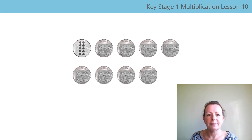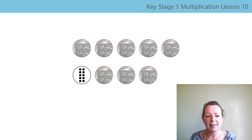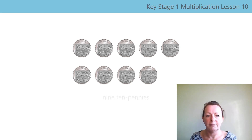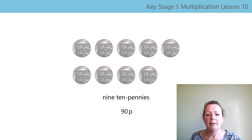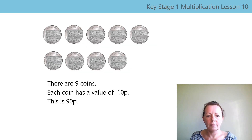Let's count: one tenpenny, two tenpennies, three tenpennies, four tenpennies, five tenpennies, six tenpennies, seven tenpennies, eight tenpennies, nine tenpennies. There are nine coins. Let's count in tens: ten, twenty, thirty, forty, fifty, sixty, seventy, eighty, ninety. This is 90p altogether. Let's say the stem sentences: there are nine coins, each coin has a value of ten-p, this is 90p. Well done, everyone.